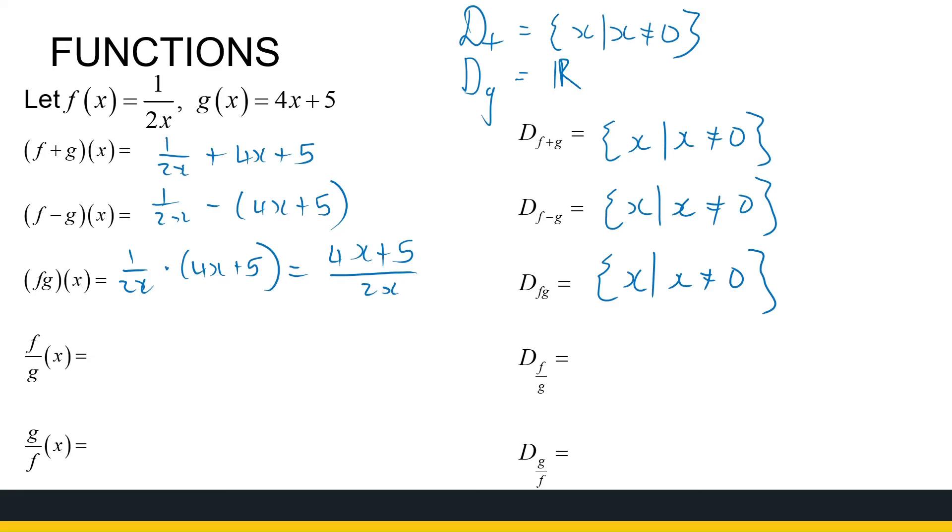Now we get to the quotients. Now we've got to think. f over g, so I've got 1 over 2x divided by 4x plus 5. Now firstly, that is very untidy. We don't like fractions on fractions. That's the same as 1 over 2x times 4x plus 5. So all of a sudden, I've got to exclude some more. I can't just exclude 0. This domain is all the x's as long as x is not equal to 0, but also x can't be minus 5 over 4, because that'll make g of x 0. And that's the condition, g of x can't be 0.